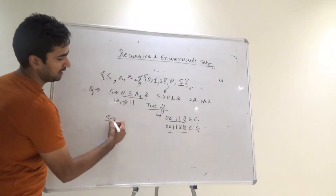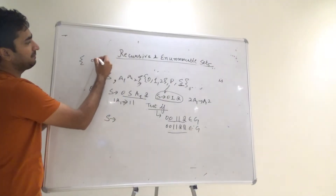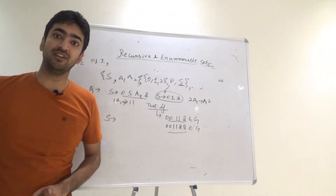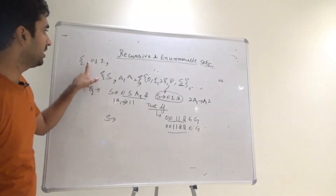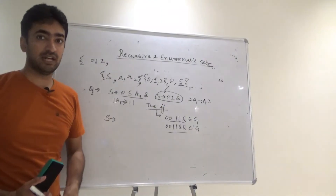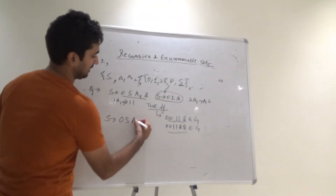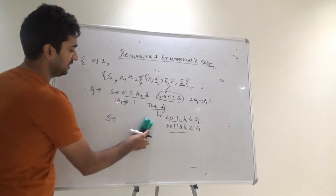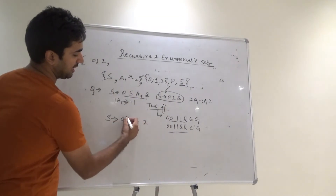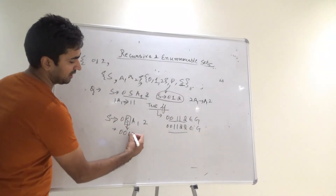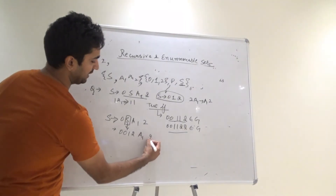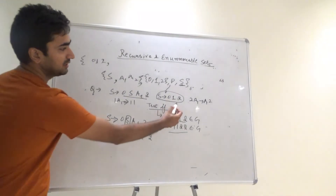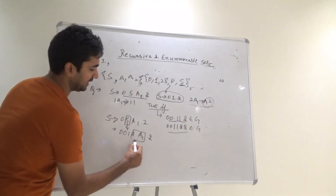Initially, since S is the starting symbol, S → 0 1 2 is already given, so 0 1 2 is definitely a part of this language — that is the minimum possible string. Now applying S → 0 S A1 2, and substituting S again as 0 S A1 2, we build up the derivation. We also have the rule 2 A1 → A1 2, so A1 2 can be written out accordingly.